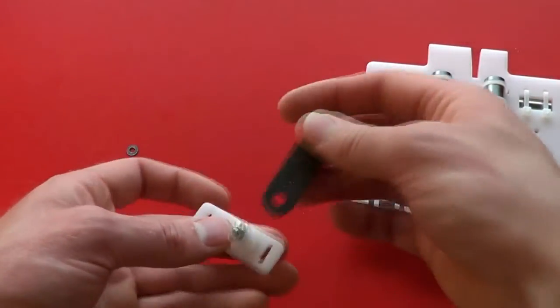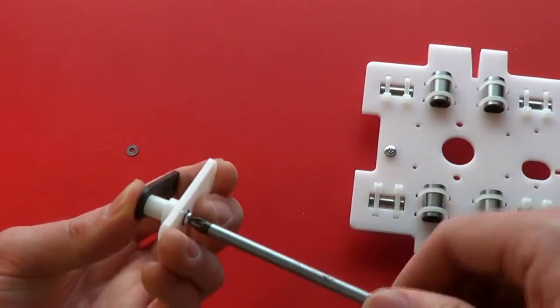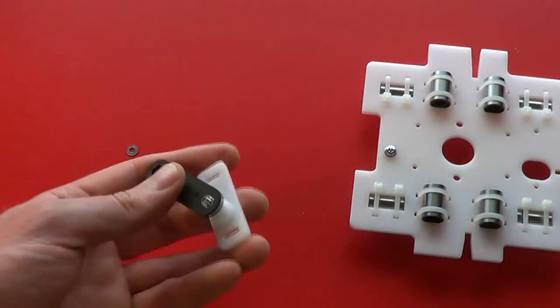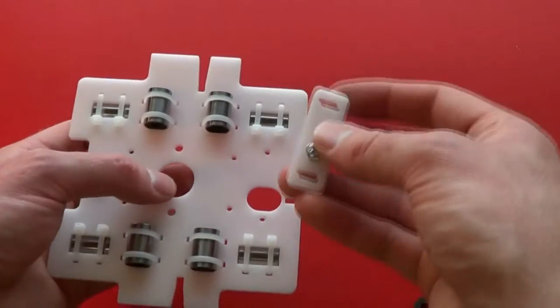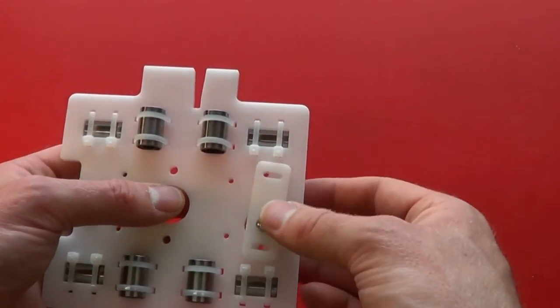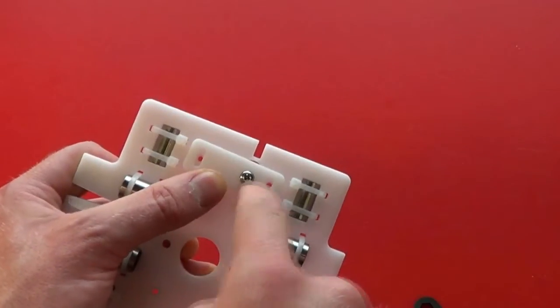And again, use the spanner and the posi drive number 1 screwdriver to tighten it. Place this assembly on top of the carriage. You can see there's two screw holes visible through the slots here.